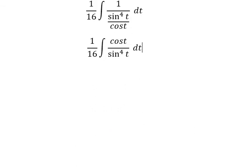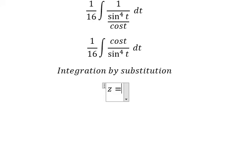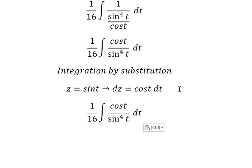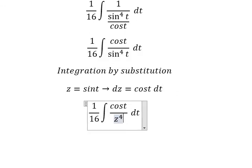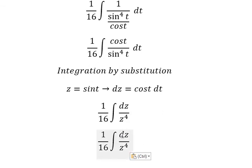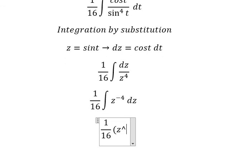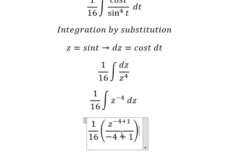We now use integration by substitution. Let z equal cos(t), so dz equals -sin(t) dt. The integral becomes z to the power of 4 times cos(t) dt, which we change to dz, giving z to the power of negative 4 dz. Integrating, we get z to the power of negative 4 plus 1, over negative 4 plus 1, plus C.